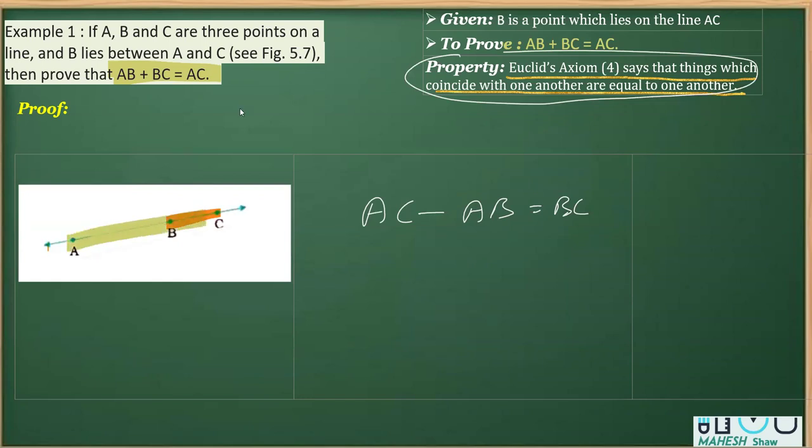you have to mention that since ABC is a unique line and further give the explanation that Euclid's Axiom says that things which coincide with one another are equal to one another. So simply say AB plus BC is equal to AC.